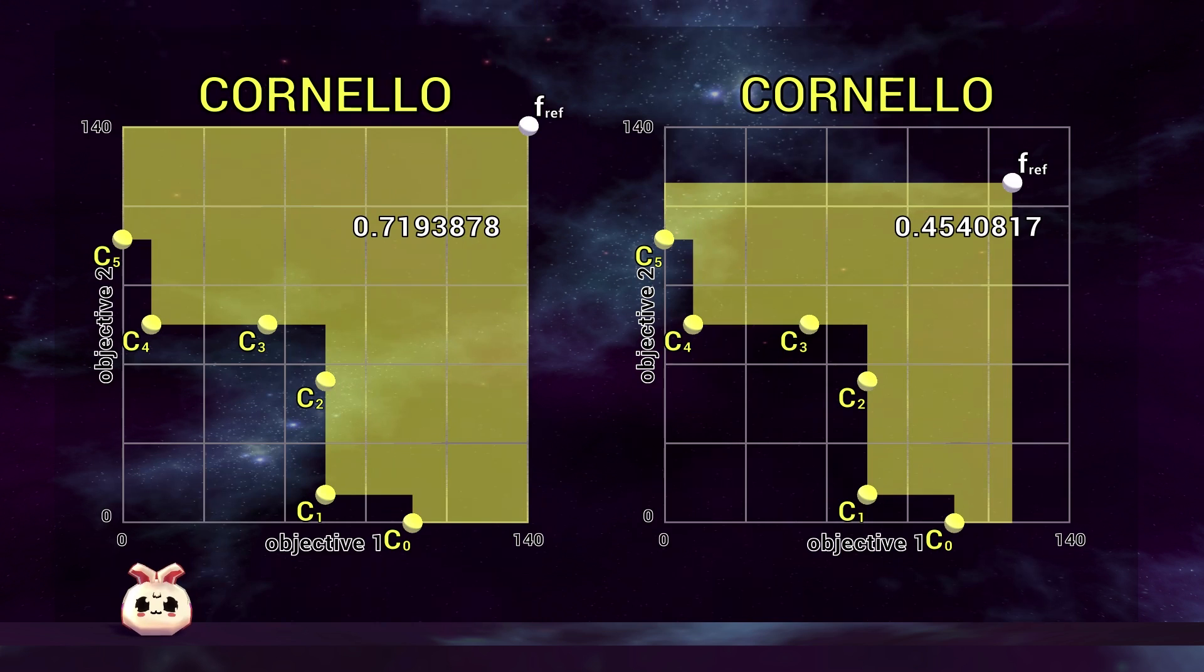It's extremely important to select identical reference points when comparing two or more solution sets. In this example, you can see I've selected two different reference points when comparing identical solution sets: reference points of 140 by 140 for the left and 120 by 120 for the right. Cornello compared to Cornello.